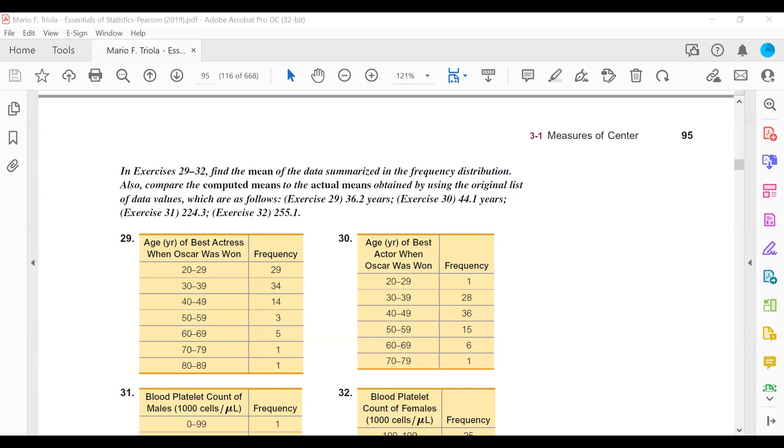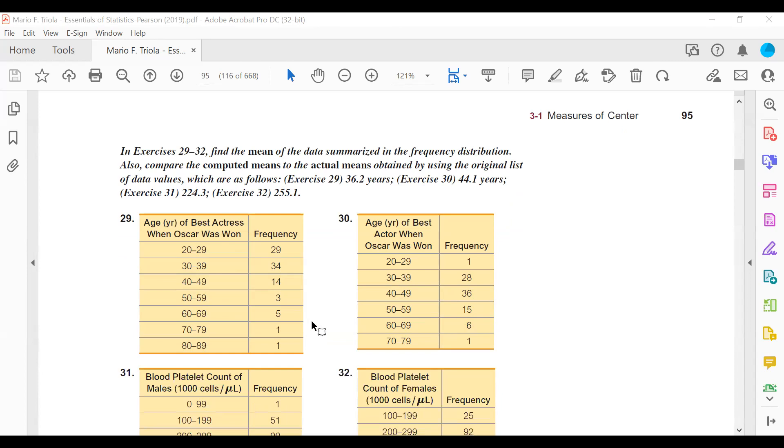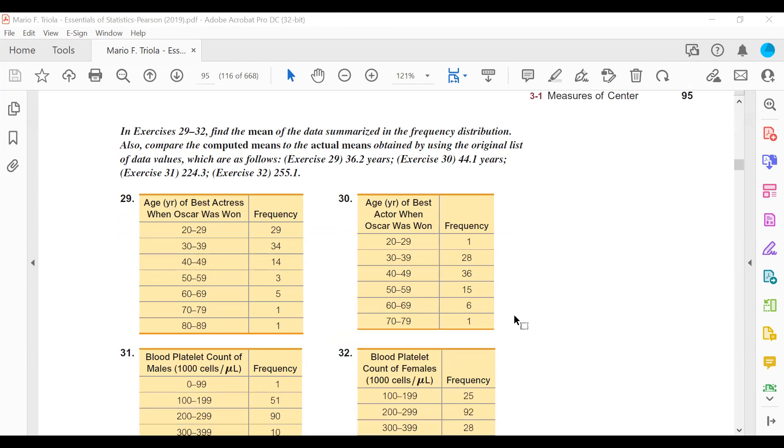So I'm on page 95, number 29. This one's talking about age of best actresses when Oscar was won. Notice that we have our intervals, our classes, and we have our frequencies. And so we're asked to find the mean. So how do we find the mean from a frequency table? So do we do it normally, just add the frequencies and then divide by the total number of intervals that we have? No, we can't do that. We can't do the same thing as we did with numbers that were listed because we don't know what those numbers are.